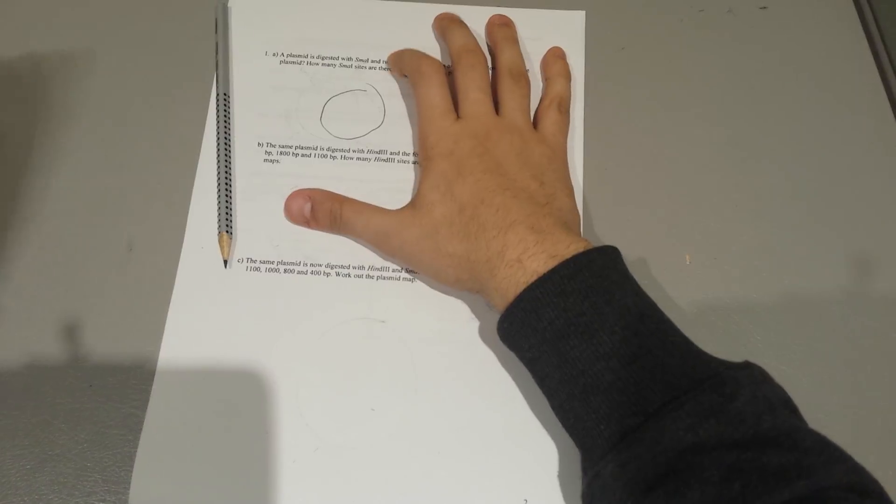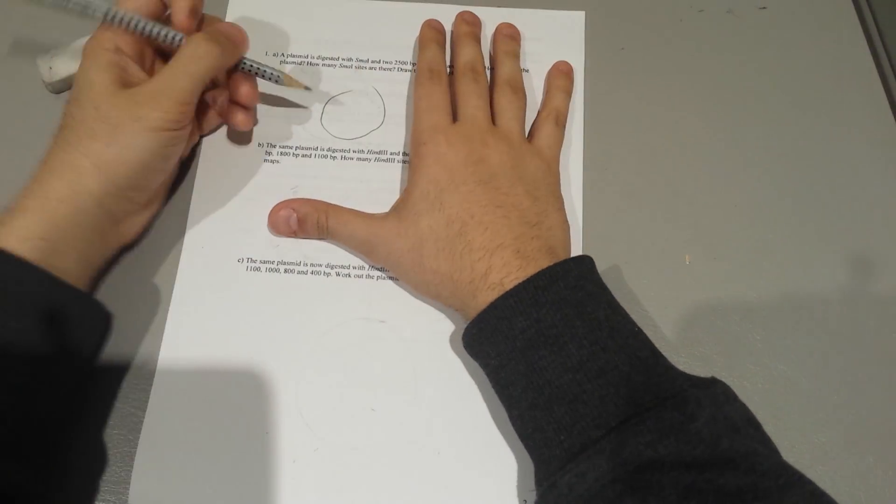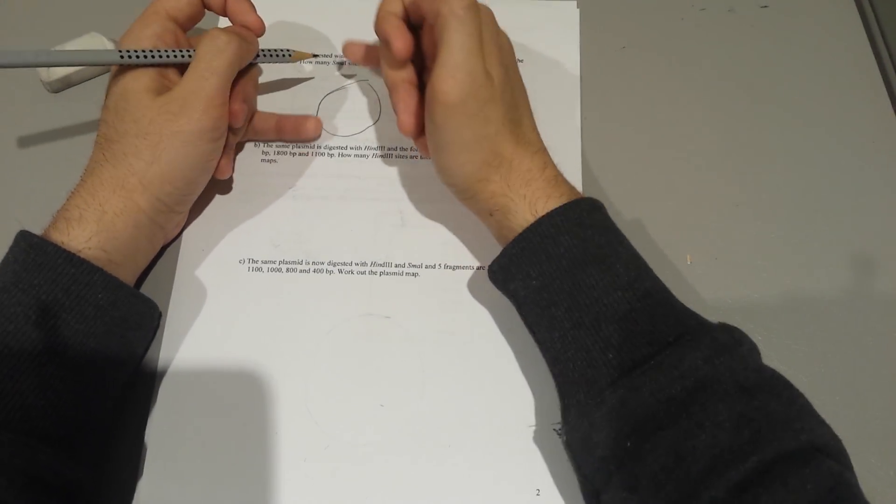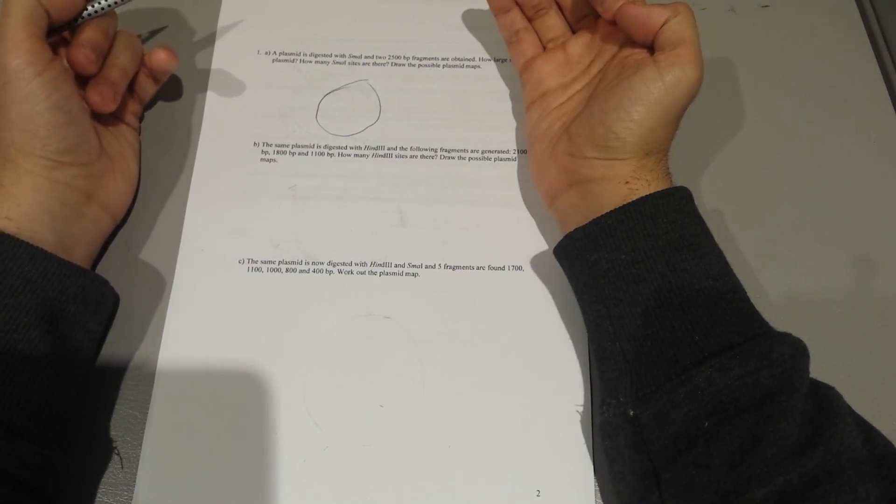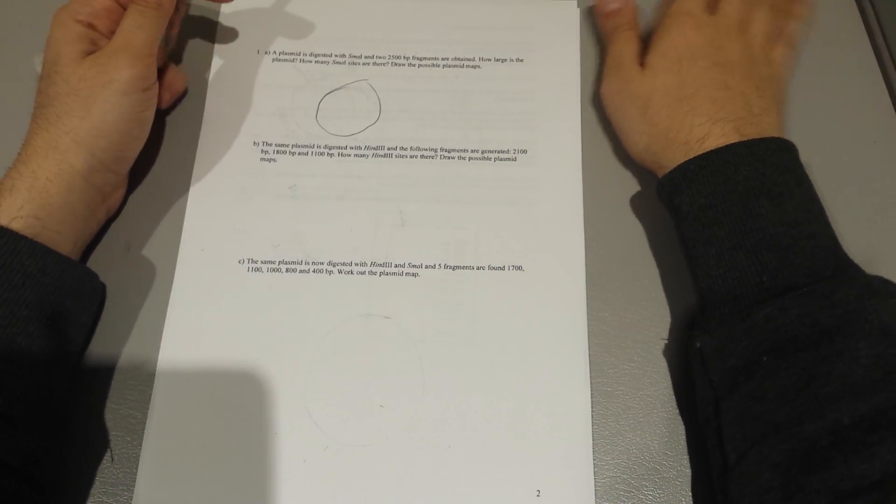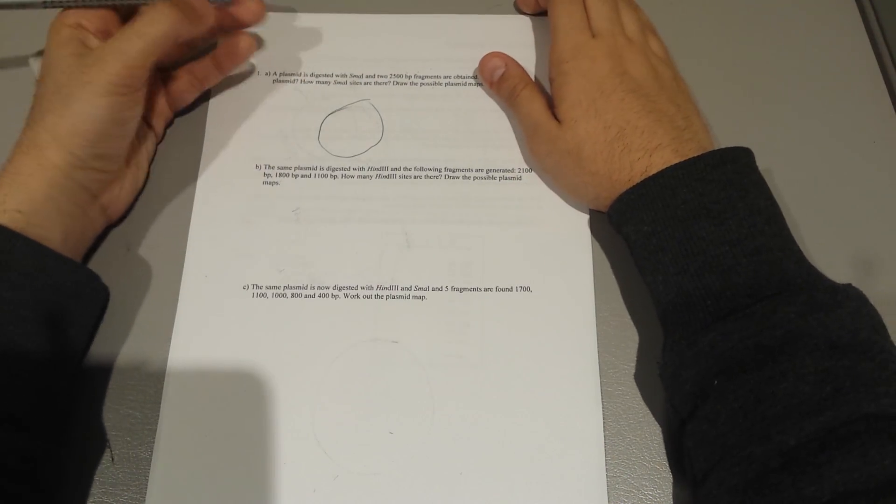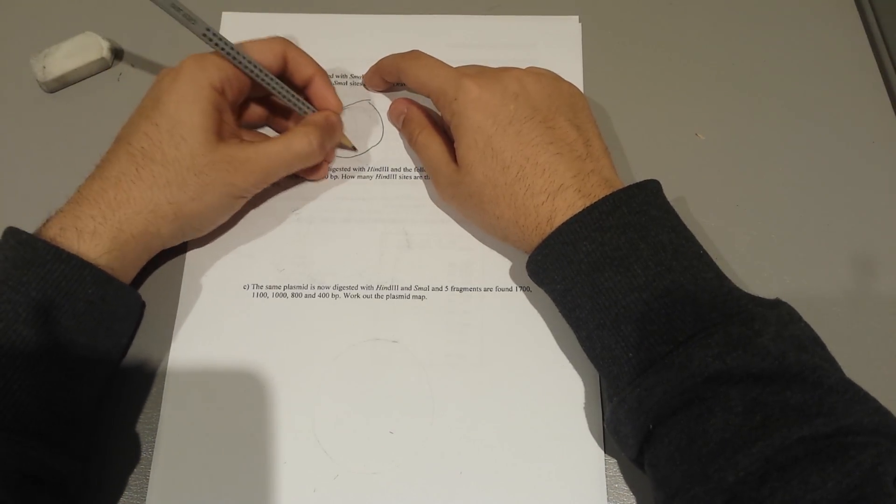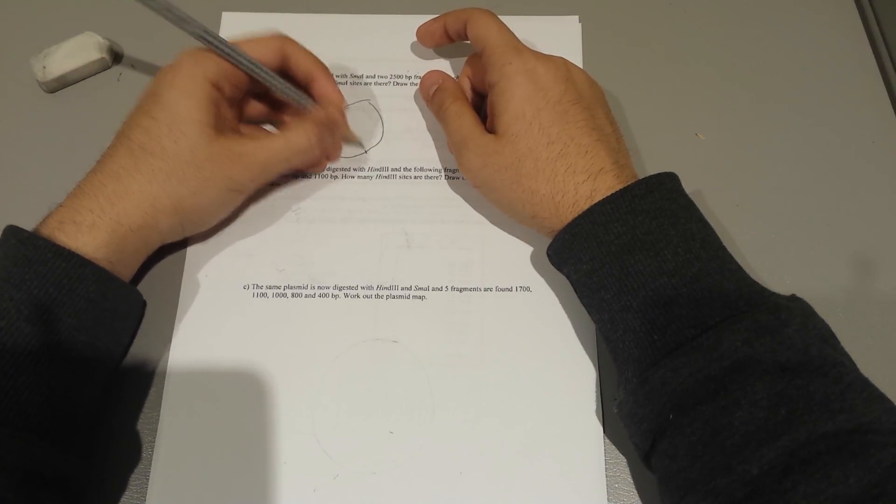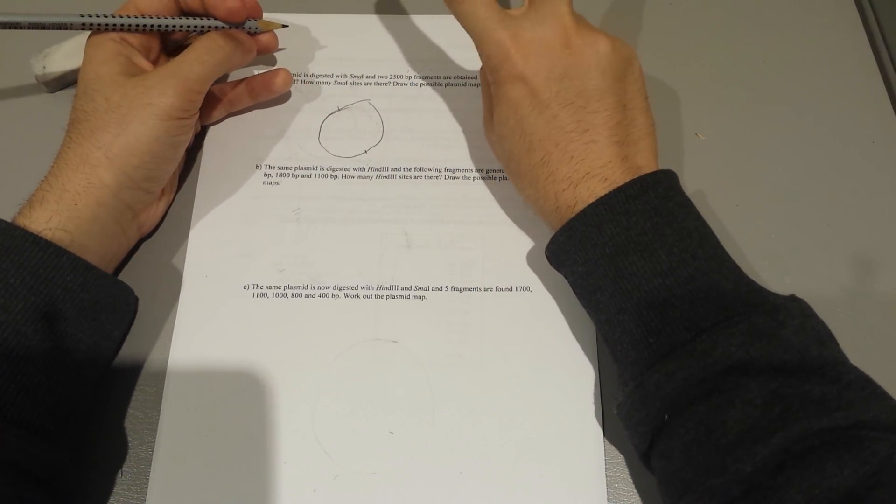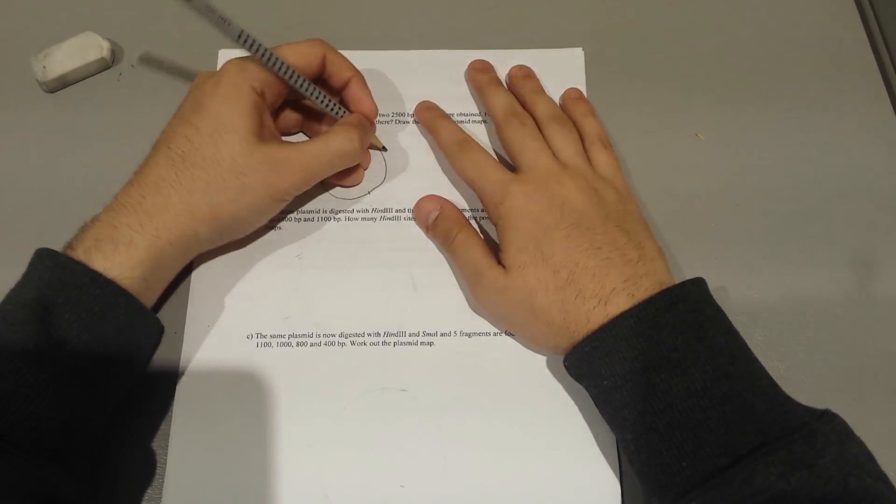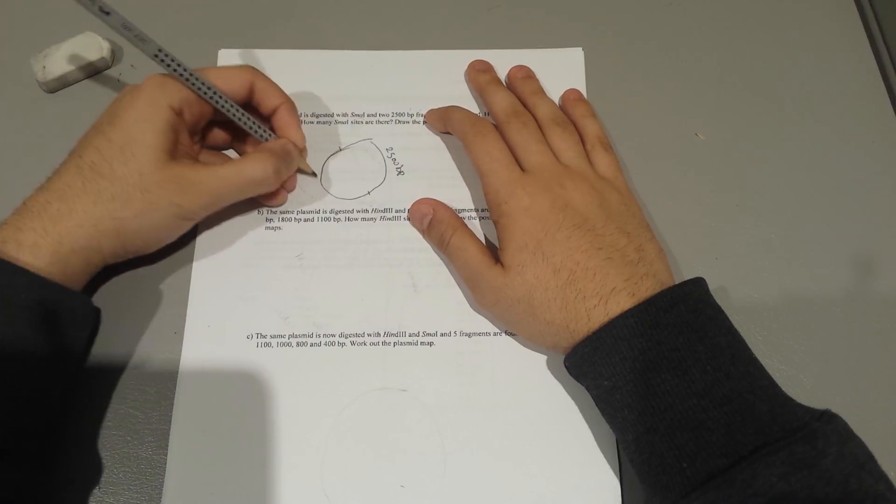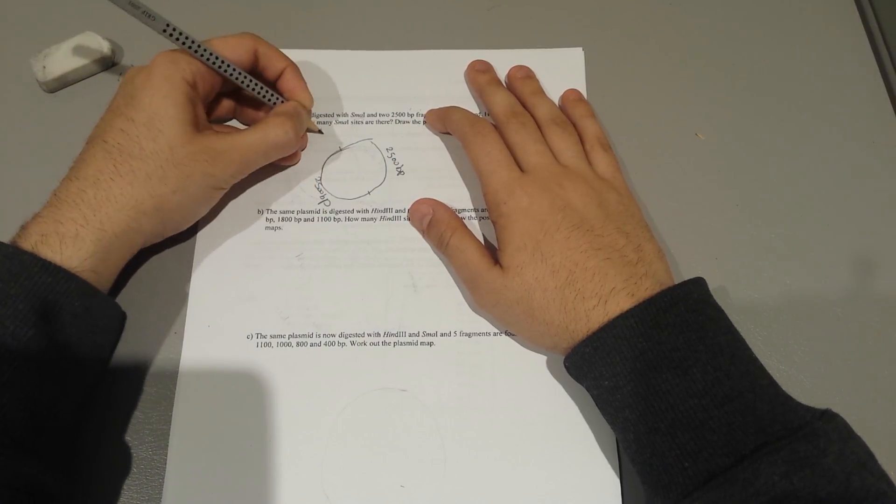So what it means is we are exposing the plasmid to a restriction endonuclease, which is an enzyme that would cut at different specific sites of the plasmid so that you can insert your gene of interest for cloning purposes. We've been told that this enzyme would give us similar weight, so I would say there would be one here and one here, and the reason I'm saying that is because we've been told two different fragments are being given.